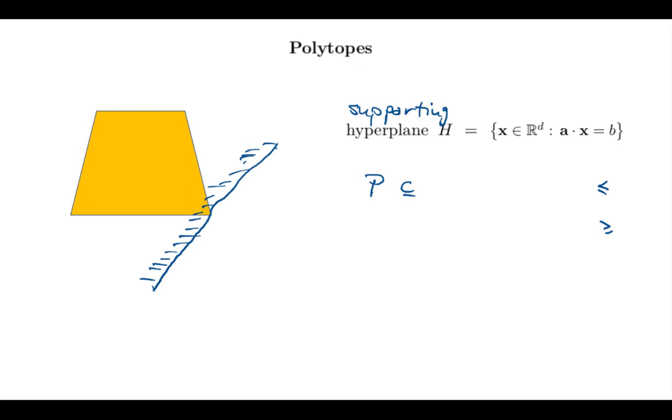But there's many, many supporting hyperplanes. I could move that, for example, to the right, or I could slant my hyperplane. At any rate, this allows me to define a face as the intersection of P with such a supporting hyperplane. So for example, my supporting hyperplane that you see in this picture for this trapezoid defines this point here as a face. Let me give you another example. So here is another supporting hyperplane, because the trapezoid is entirely contained in this half space underneath.